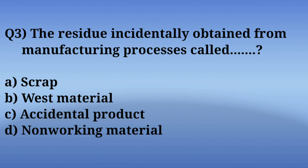Question number 3: The residue incidentally obtained from the manufacturing process is called what? Options are: A. Scrap, B. Waste material, C. Accidental product, D. Non-working material. The correct answer is Option A — Scrap. Scrap is the residue that remains incidentally after the completion of the manufacturing process.